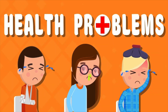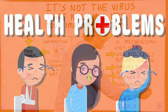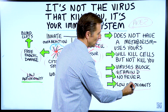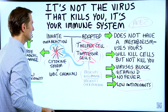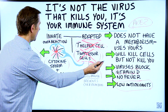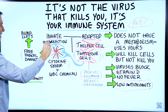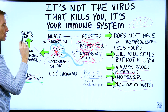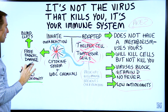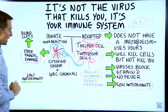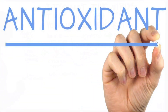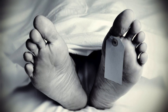Having a pre-existing health problem means you're already going into this condition with low levels of antioxidants. The problem is that this overreaction is creating so much inflammation, oxidation, and free radicals. If you don't have enough antioxidants to counter that, that's when people start dying.